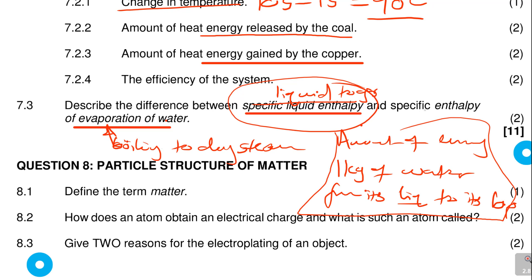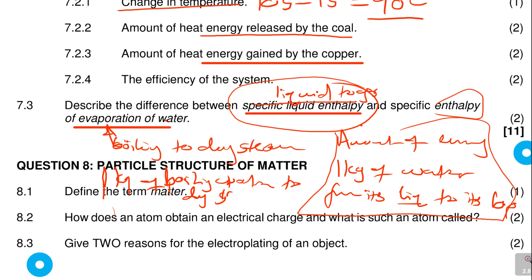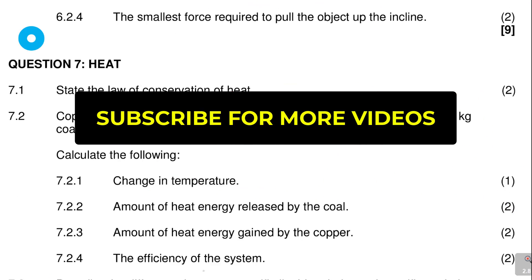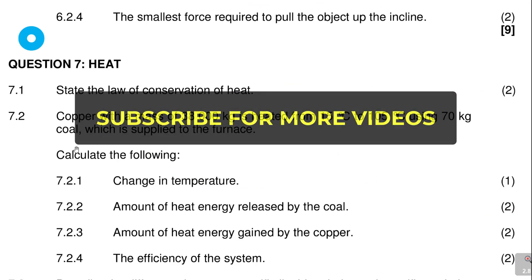The specific enthalpy of evaporation is the amount of heat energy needed to change 1 kilogram of boiling water to dry steam. Please check your answers in your book. We're done with that — next is particle structure of matter.